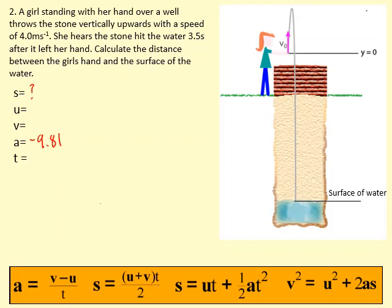It left her hand at 4 meters per second and it was in the air for 3.5 seconds. So suvats without the v in it is s equals ut plus half at squared.